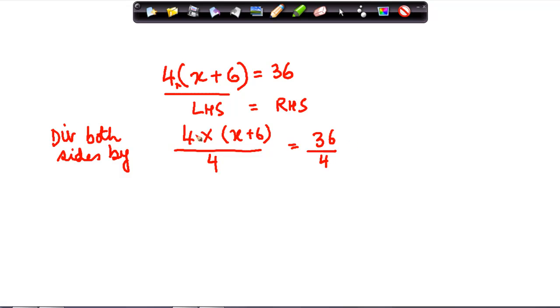Now 4 times (x + 6), so this 4 will cancel out with this 4, and I get what? 1. 4 divided by 4 is 1 times (x + 6). Now 36 by 4 can also be written as 18 times 2 divided by 2 times 2.